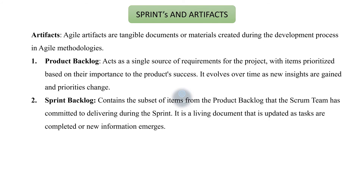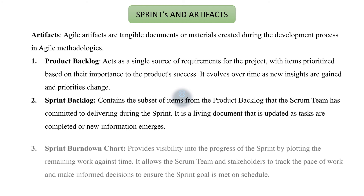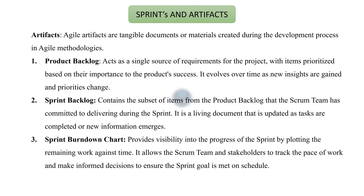The second artifact is the sprint backlog, which contains the subset of items from the product backlog that the Scrum team has committed to delivering during the sprint. It is a living document that is updated as tasks are completed or new information emerges. The third artifact is the sprint burndown chart, which provides visibility into the progress of the sprint by plotting the remaining work against time, allowing the Scrum team and stakeholders to track the pace of work and make informed decisions to ensure the sprint goal is met on schedule.